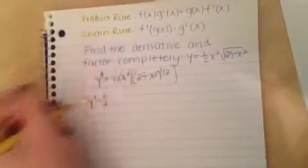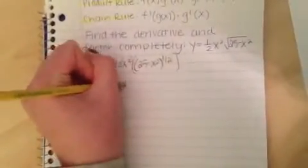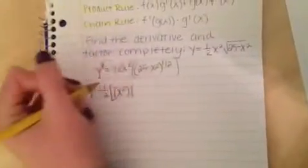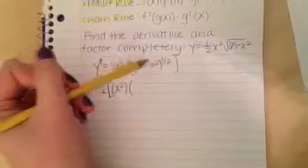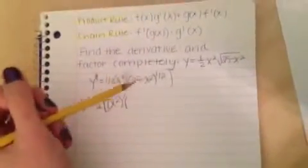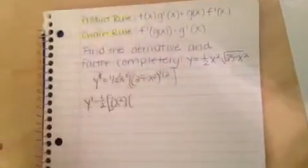So the one half is just a number, so we'll just keep it out in front. The product rule first says that we take the first one, derivative of the second. And now since this one has an exponent, we have to do a chain rule, which is up here.